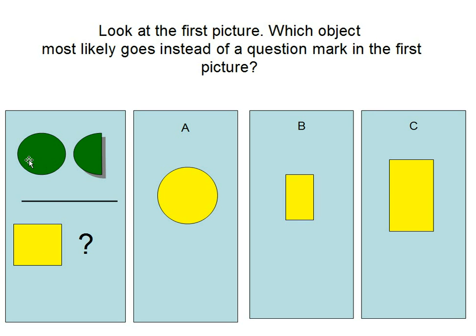The first picture shows a circle and a half of a circle. So the answer is B because there's a square on the first picture. And if you cut half of it off, it will be the rectangle which is in B.